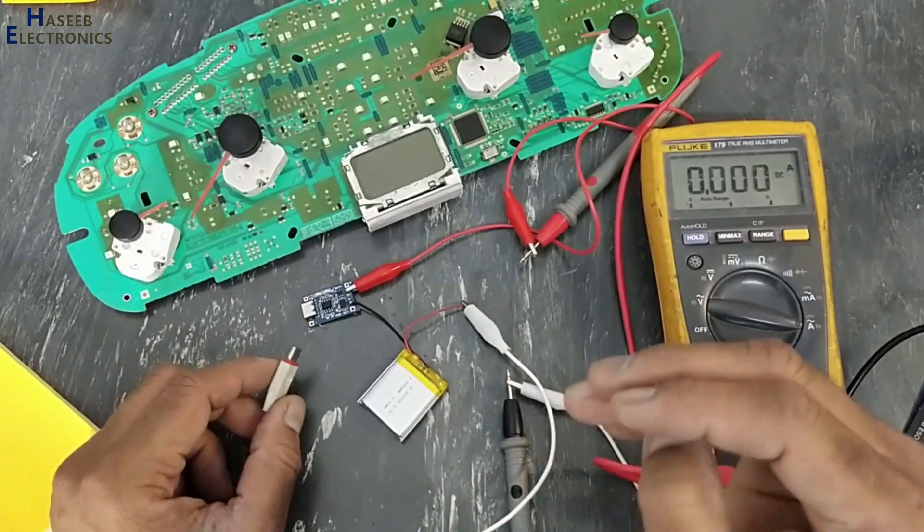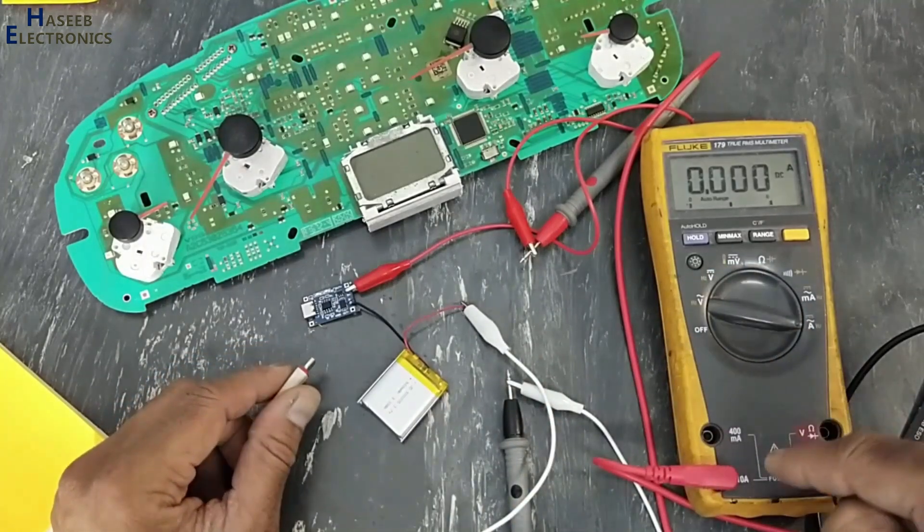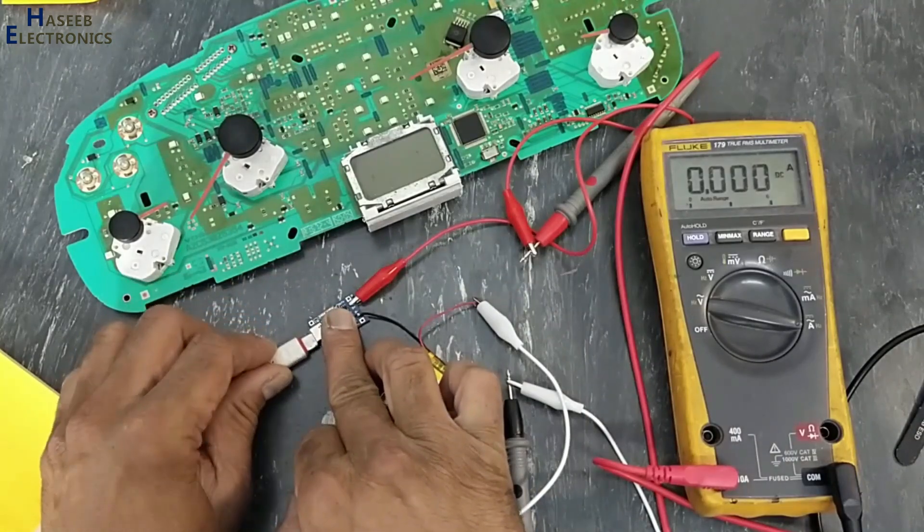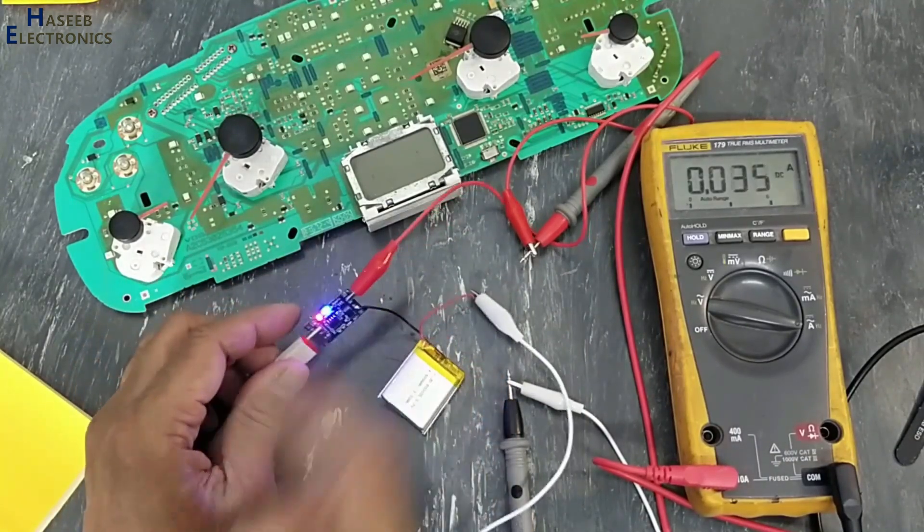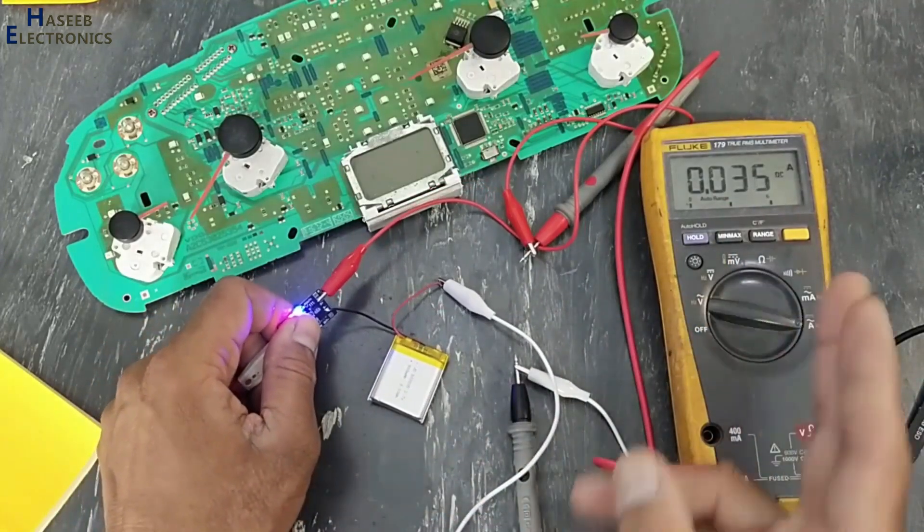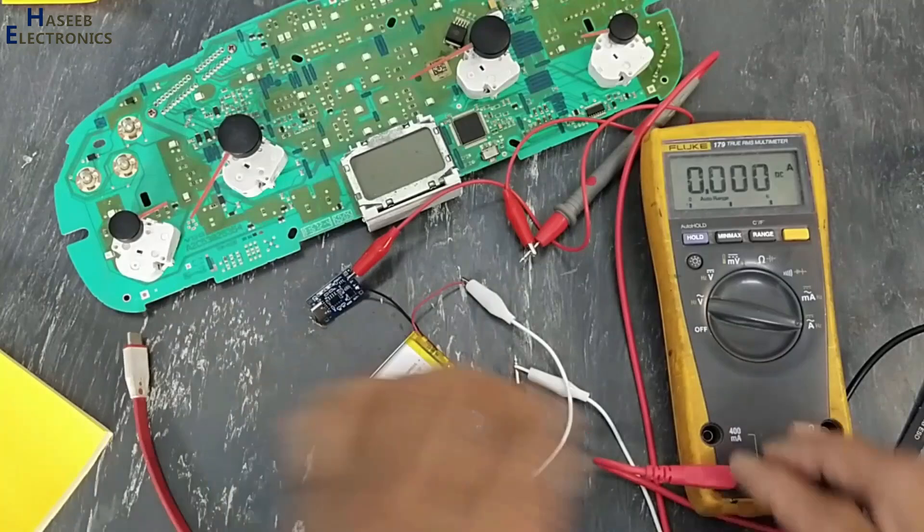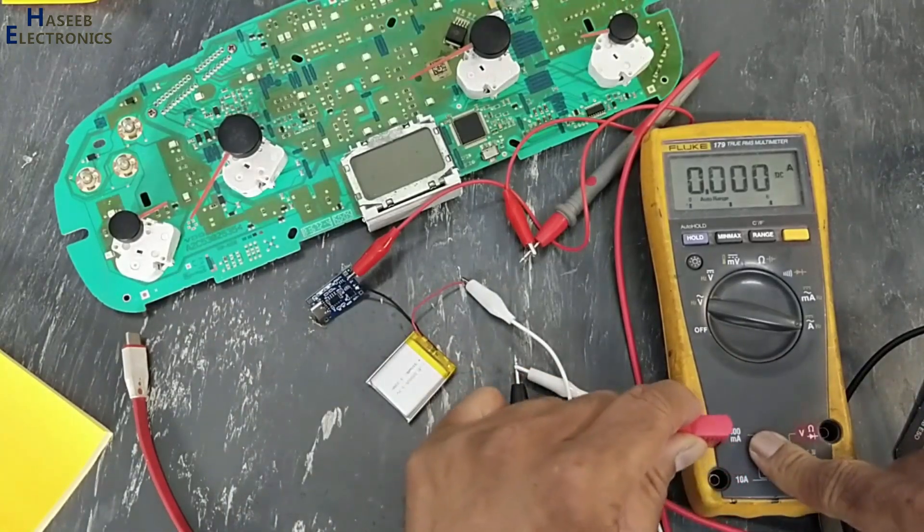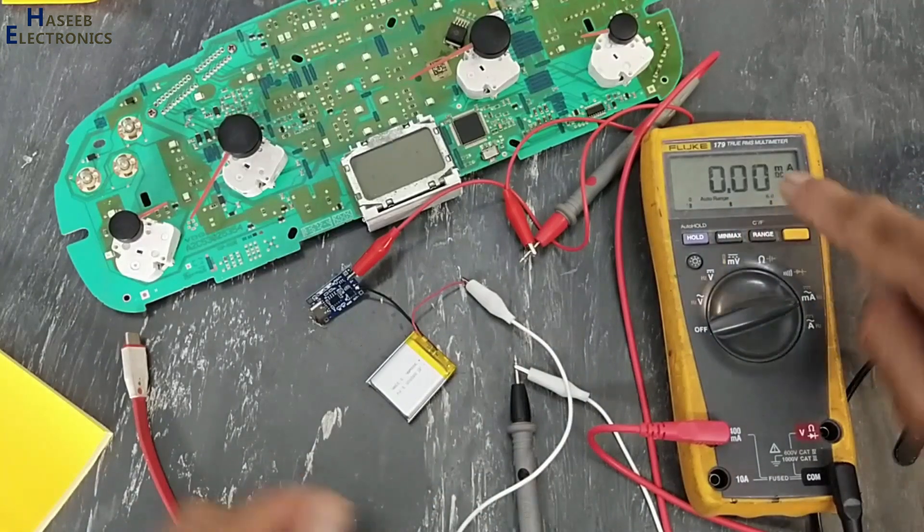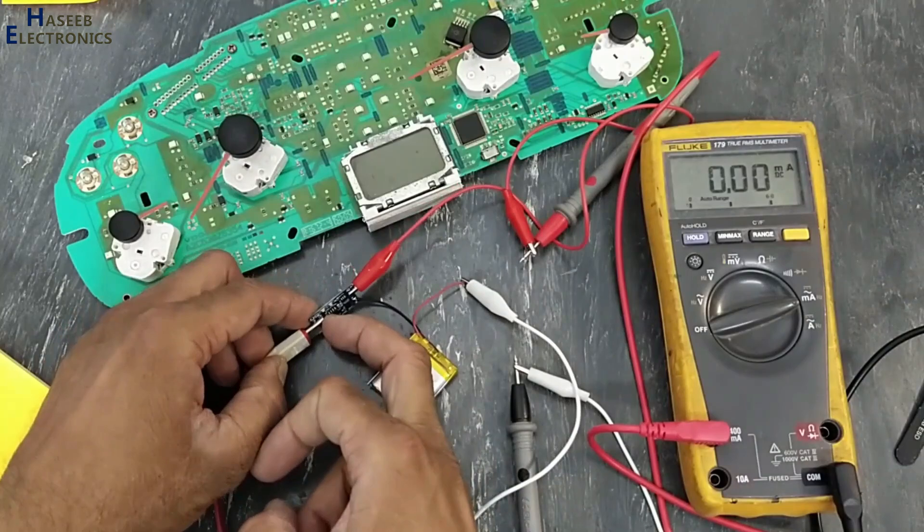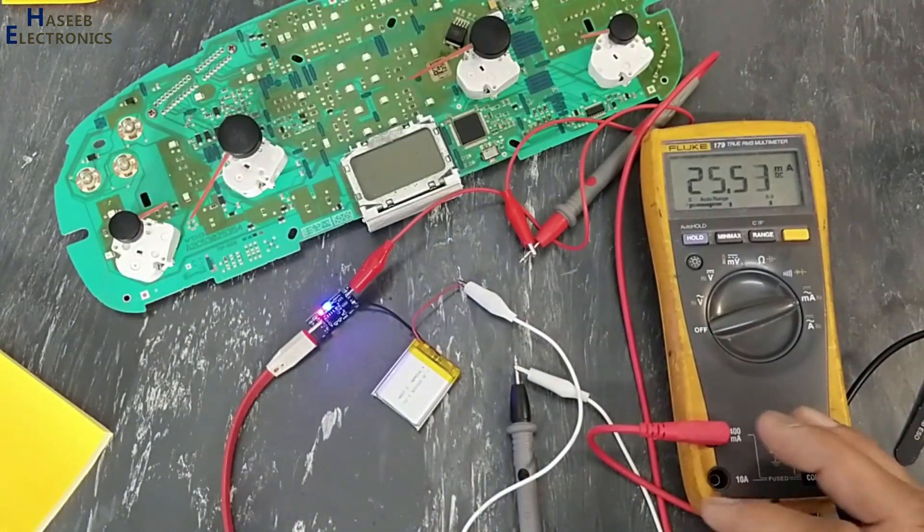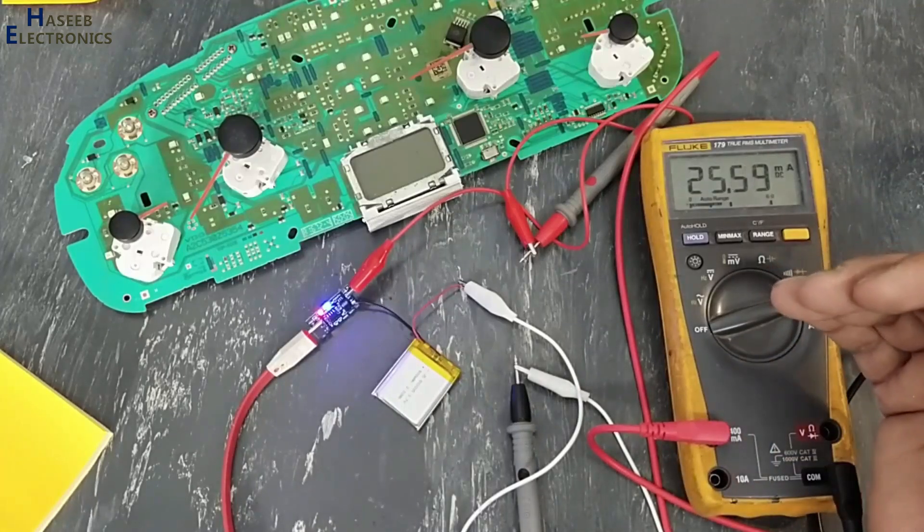When we are not sure about the amount of current, that time we will use highest range. This time I am using ampere range. It is 0.035, that means it is now within this range. Now I will shift here into milliampere DC. 25 milliampere. So it is a perfect method to measure milliampere.